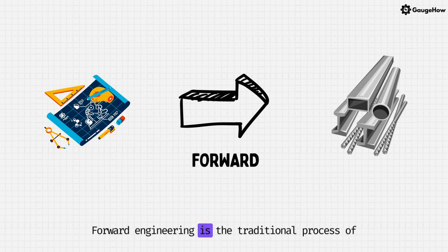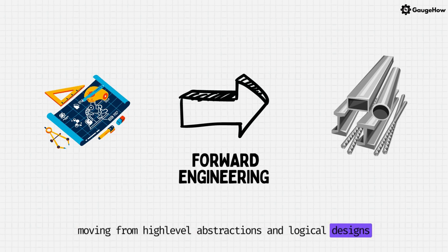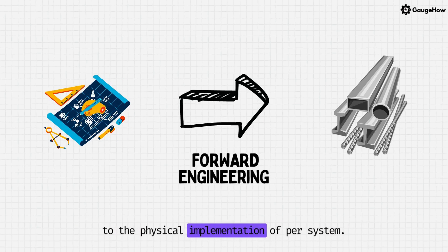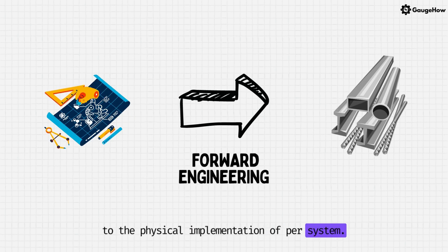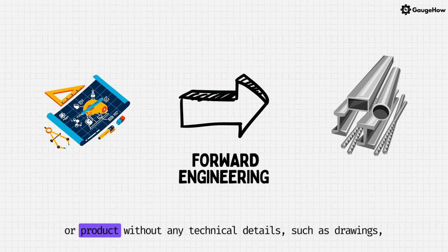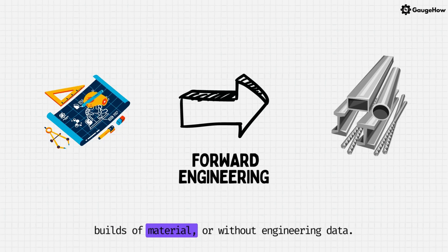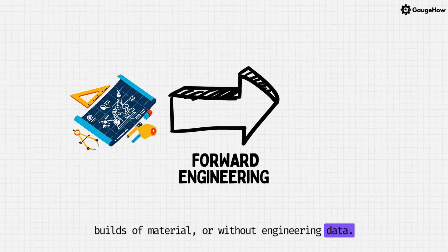Forward engineering is the traditional process of moving from high-level abstractions and logical designs to the physical implementation of a system. In some situations, there may be a physical part or product without any technical details, such as drawings, bills of material, or without engineering data.